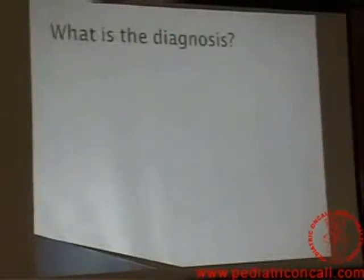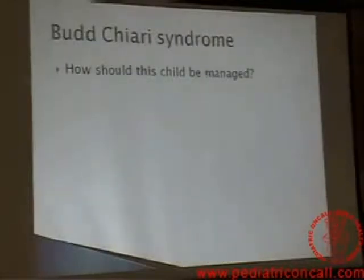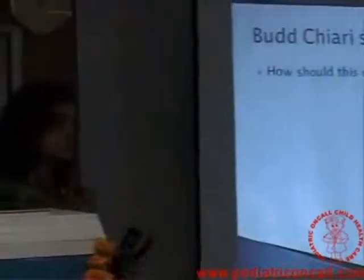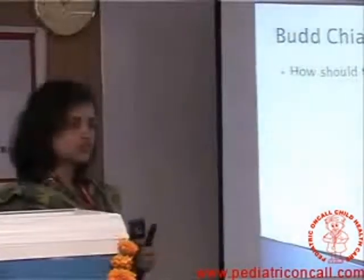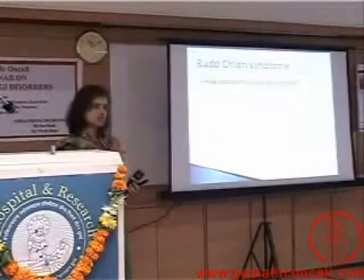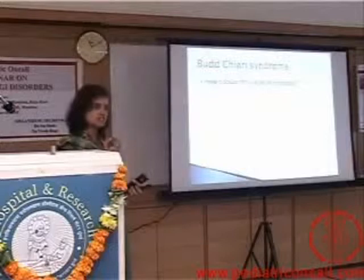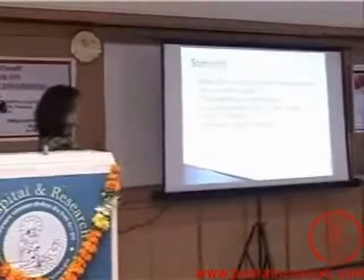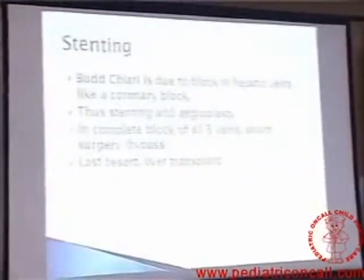So the diagnosis is Budd-Chiari syndrome. Now how should this child be managed? Budd-Chiari means your hepatic veins — all three hepatic veins in the liver — are blocked. Blood has to go out from there. The only way you can open this is to do an angioplasty, like how it's done elsewhere, or put a stent. It's like a coronary block — you need to do stenting and angioplasty.